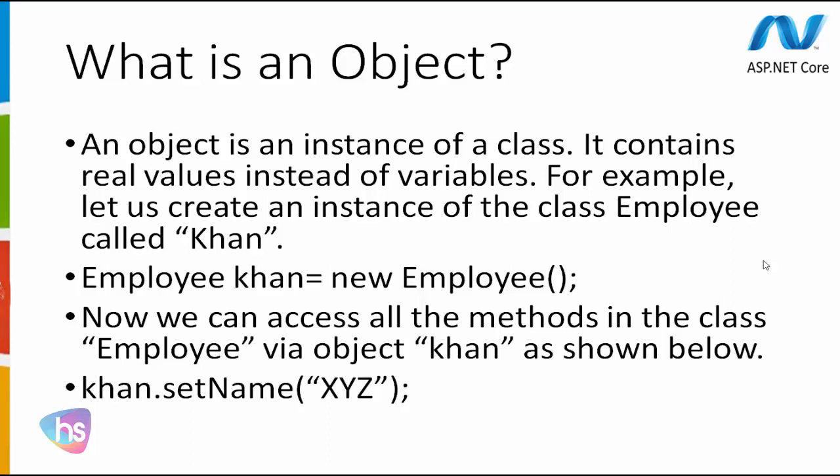Employee con equals new Employee — we are calling the constructor here. Now we can access all the methods in the class Employee via the object 'con', for example: con.SetName('xyz'). This sets the name of the object to 'xyz'. The object is like a box — we can put things in it and reference or call it. That is a major advantage of objects in object-oriented programming.